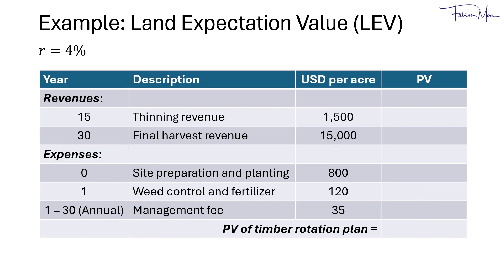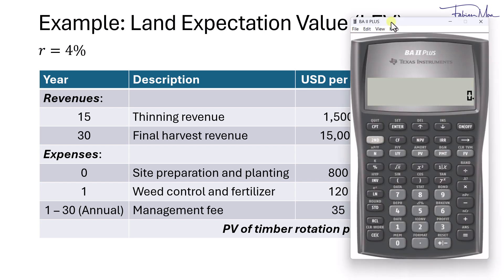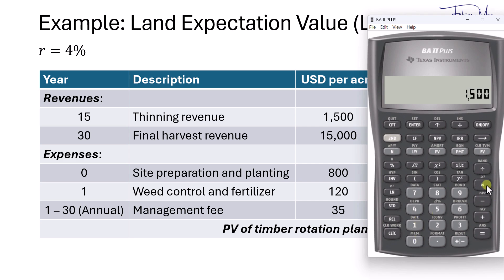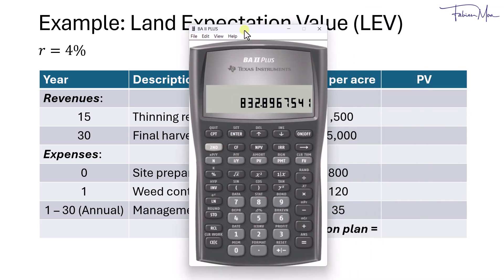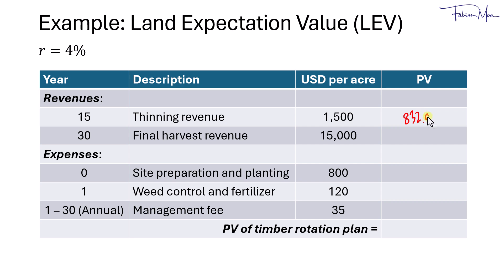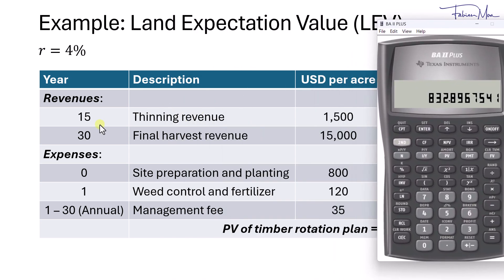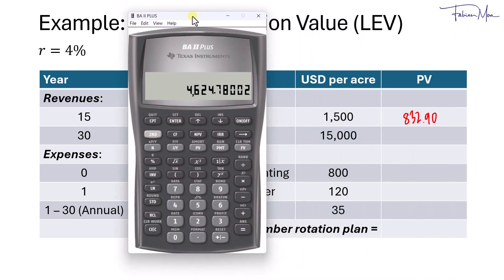For each item, we calculate the PV in US dollars per acre, then net revenues against expenses to get the PV of the timber rotation plan, using a discount rate of 4%. For the thinning revenue in year 15 at $1,500 per acre, we divide $1,500 by 1.04 to the power of 15, giving us $832. For the final harvest revenue in year 30 at $15,000 per acre, we divide $15,000 by 1.04 to the power of 30, giving us $4,624.78.